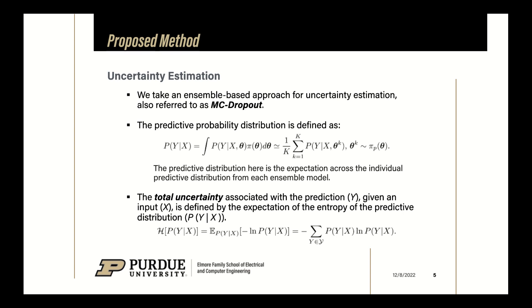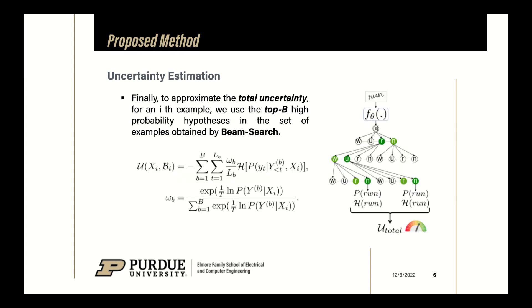Following this, we compute the total uncertainty associated with the input, which is defined as the expectation of the entropy of the predictive distribution. Finally, when we have the predicted distribution calculated as described, we compute the uncertainty as the weighted average of the entropy of each of the predictions obtained via beam search.